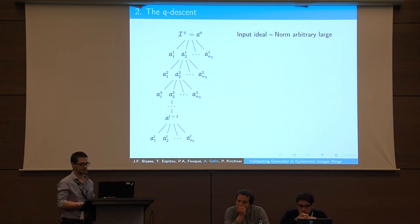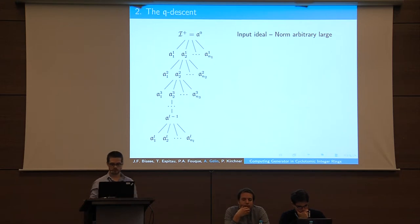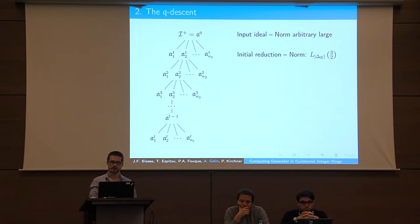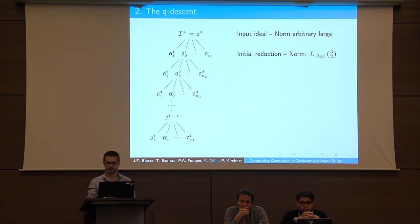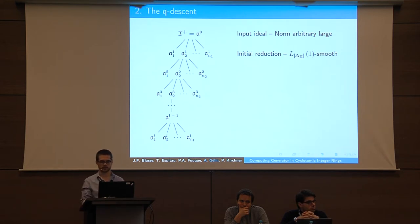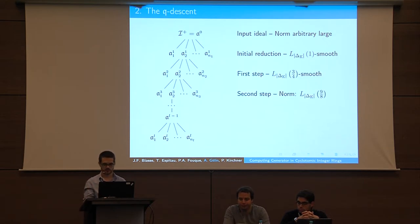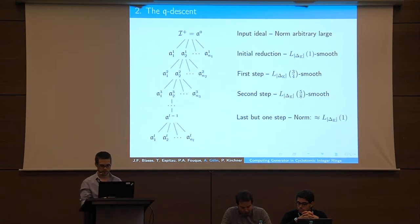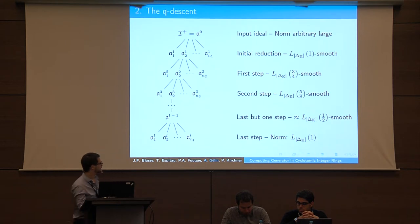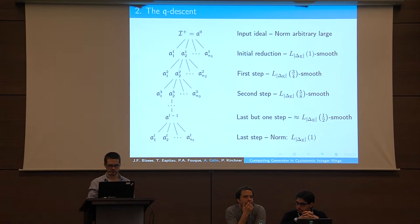Here is an outline of the descent. At the beginning we have an input ideal with arbitrary norm. We begin by bootstrapping the descent: it's an ideal reduction that gives something in L(3/2). Using smoothness results, we can expect to have something that is L(1)-smooth. After this first step, we continue the descent and the norm decreases, until in the end we have something with norm in L(1), and using smoothness results we can obtain something that is L(1/2)-smooth.